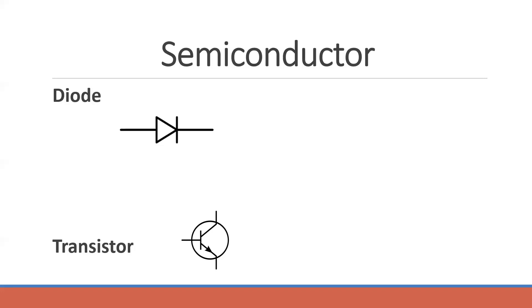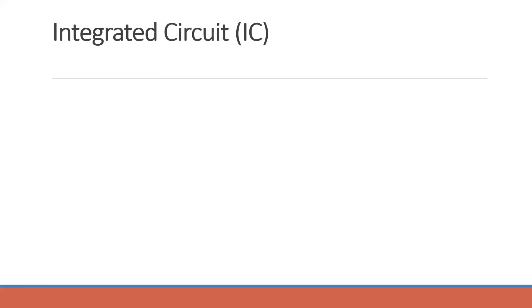Transistors can also be used in most analog applications — rather than simply switching, they control how much current passes through them. For example, a transistor in analog applications is mainly used for the purpose of signal amplification. The best examples in analog circuits are amplifiers, such as common emitter (CE) and common collector (CC) amplifier configurations that are studied in basic electronics.